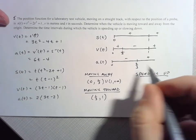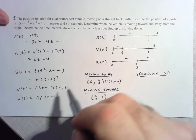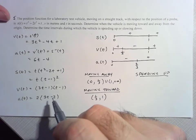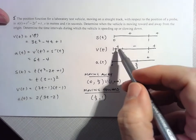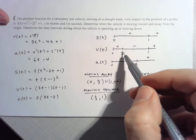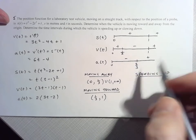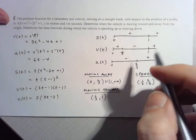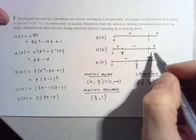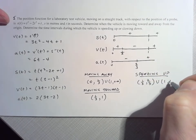For speeding up and slowing down, this does not rely on position at all — it has to do with the interaction between velocity and acceleration. For speeding up, we need the velocity and acceleration to have the same sign. Between 1/3 and 2/3, they're both negative. So the vehicle is speeding up on (1/3, 2/3). And after 1, they're both positive, so also speeding up on (1, +∞).